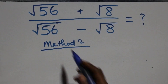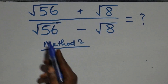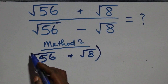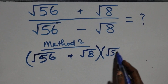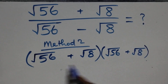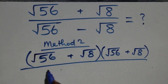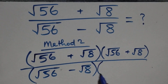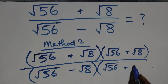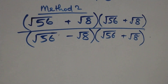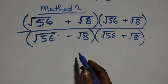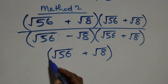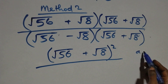In the second method, we rationalize directly by multiplying the numerator and denominator by the conjugate of the denominator. We have root fifty-six plus root eight, multiplied by root fifty-six plus root eight, which is the conjugate of the denominator. The denominator is root fifty-six minus root eight, multiplied by root fifty-six plus root eight. The numerator becomes root fifty-six plus root eight, all squared.